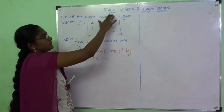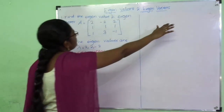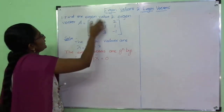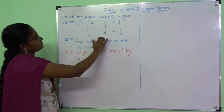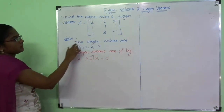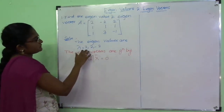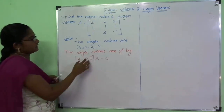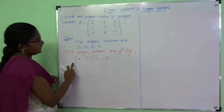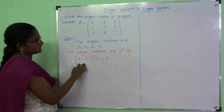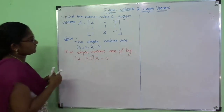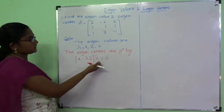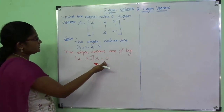In the last video we saw about eigenvalues. Now we are going to see about eigenvectors. I am going to use the same problem which I used for finding eigenvalues: find the eigenvalue and eigenvector of the given matrix A. The eigenvalues are lambda equal to 2, 2, and minus 2. We are going to find the eigenvectors using these eigenvalues. The eigenvectors are given by the equation (A minus lambda I) times X-bar equal to 0, where A is the given matrix, lambda is the scalar, I is the identity matrix, and X-bar is [x1, x2, x3].